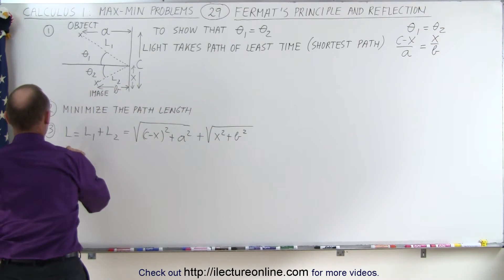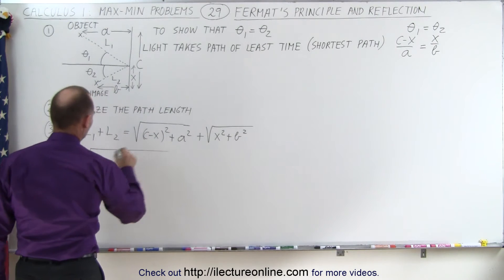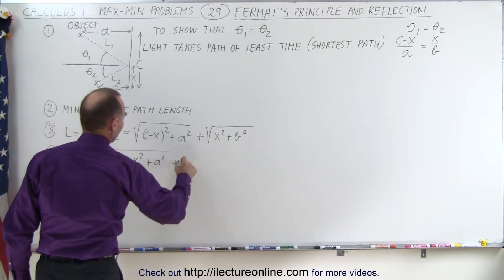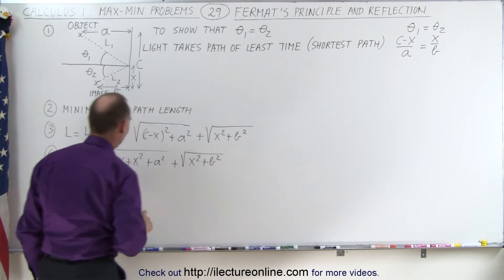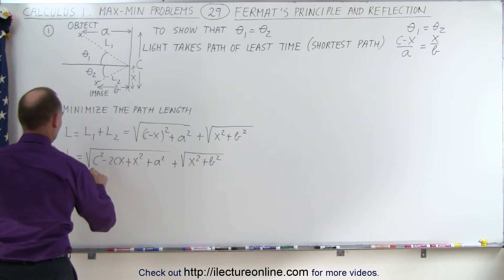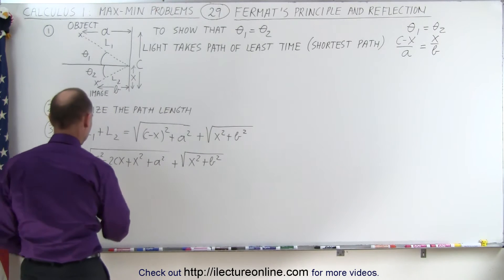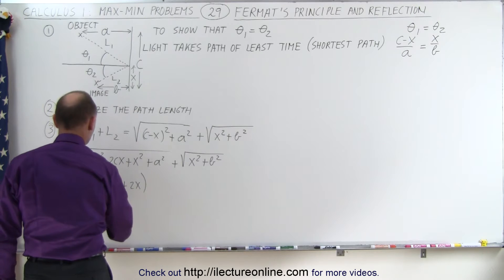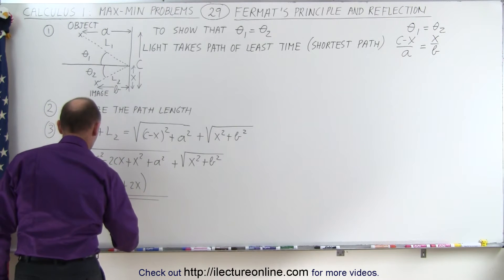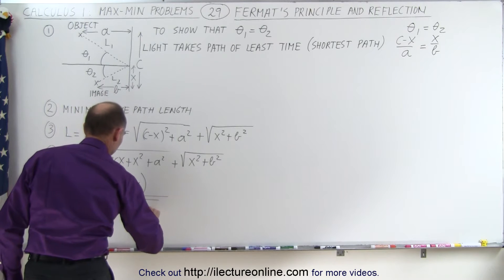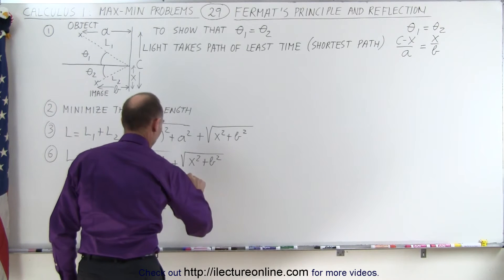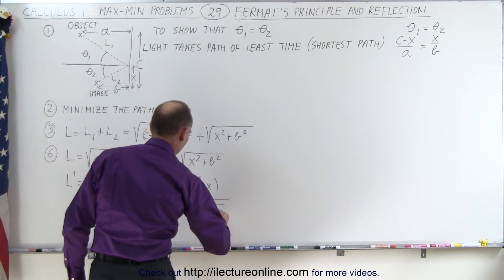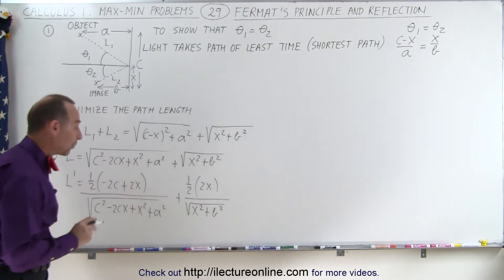L is equal to the square root of c squared minus 2cx plus x squared plus a squared, plus the square root of x squared plus b squared. Now taking the derivative: L prime is equal to 1 half times (minus 2c plus 2x) divided by the square root of c squared minus 2cx plus x squared plus a squared, plus 1 half times 2x divided by the square root of x squared plus b squared.